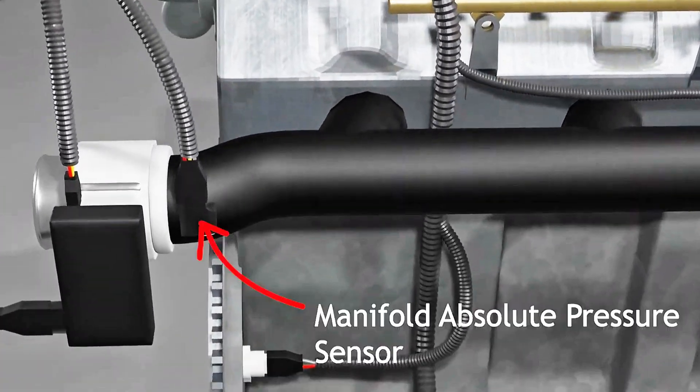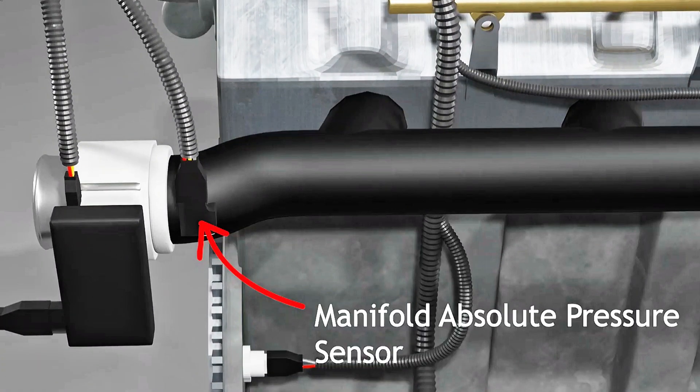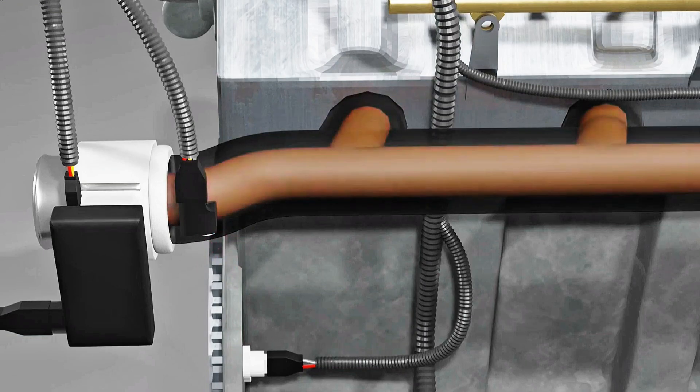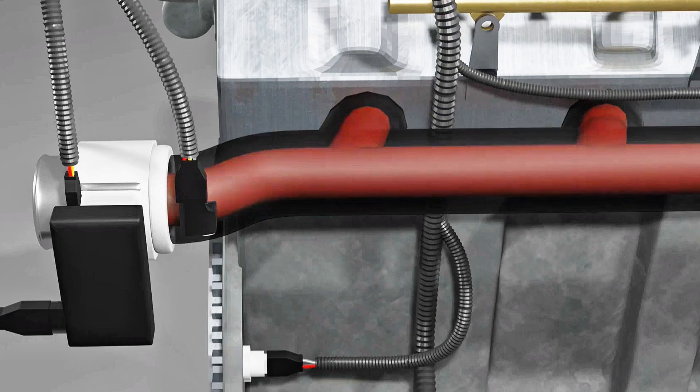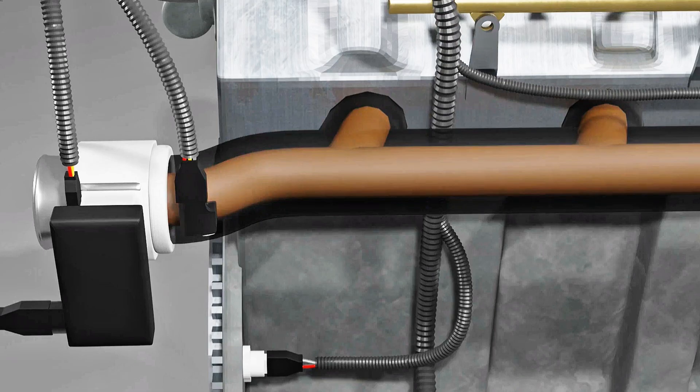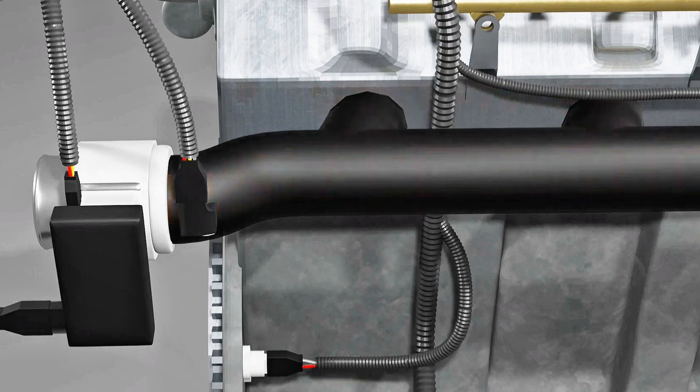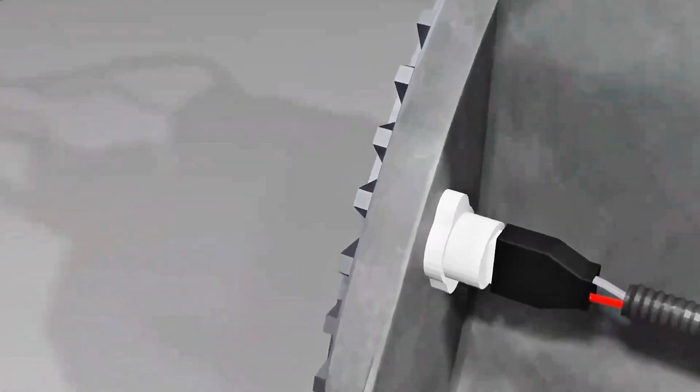Then there is the manifold absolute pressure sensor. This is to measure the pressure in the intake manifold. This sensor will know the condition of the engine's workload. If the MAP vacuum is large, then the engine is in an unloaded position. However, if the pressure is close to zero, then the engine is under load.